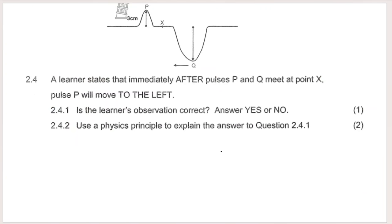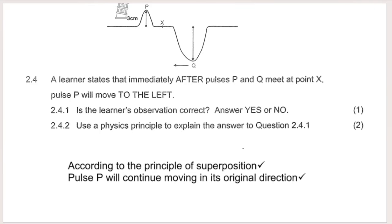Question 2.4: a learner states that immediately after pulses P and Q meet at X, pulse P will move to the left. Q was initially moving left and P was initially moving right. When they meet and destructive interference occurs, they continue in their original directions. So P carries on moving to the right. The answer is no — according to the principle of superposition, pulse P will continue moving in its original direction, which is to the right.